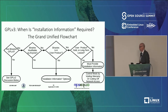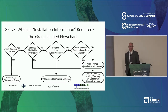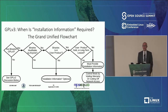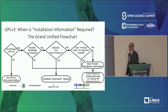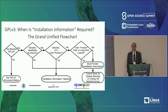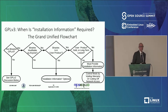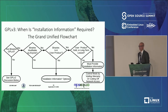What I've put together here I call the Grand Unified flowchart for deciding these things. How do you decide whether you have to provide the installation information or not for a particular device? If you go through this flowchart, it should give you the answer. Note the first yes/no question is whether the binaries are GPL v3 or not. If they're GPL v2, I'll talk about that later. For GPL v3, this flowchart shows how to make a decision about whether installation information is something you do or optionally don't have to provide.